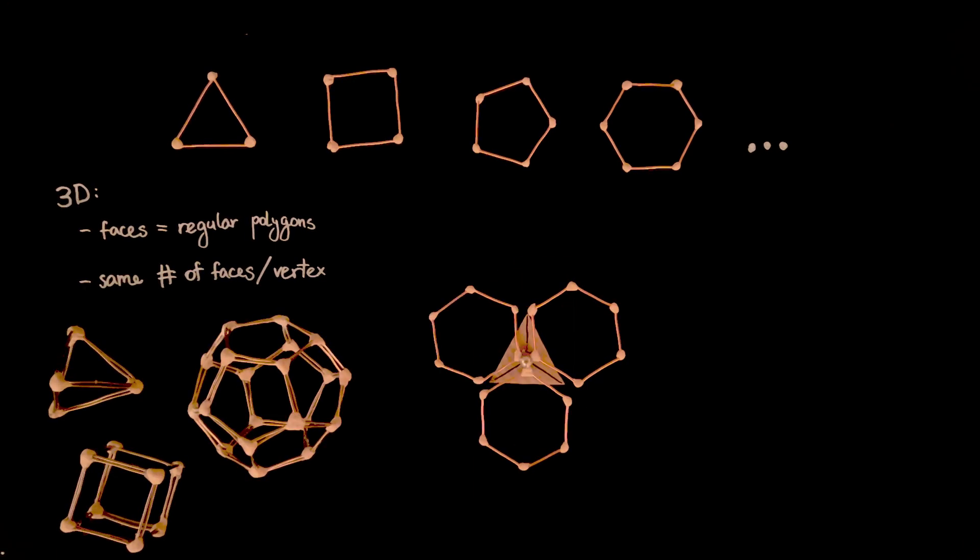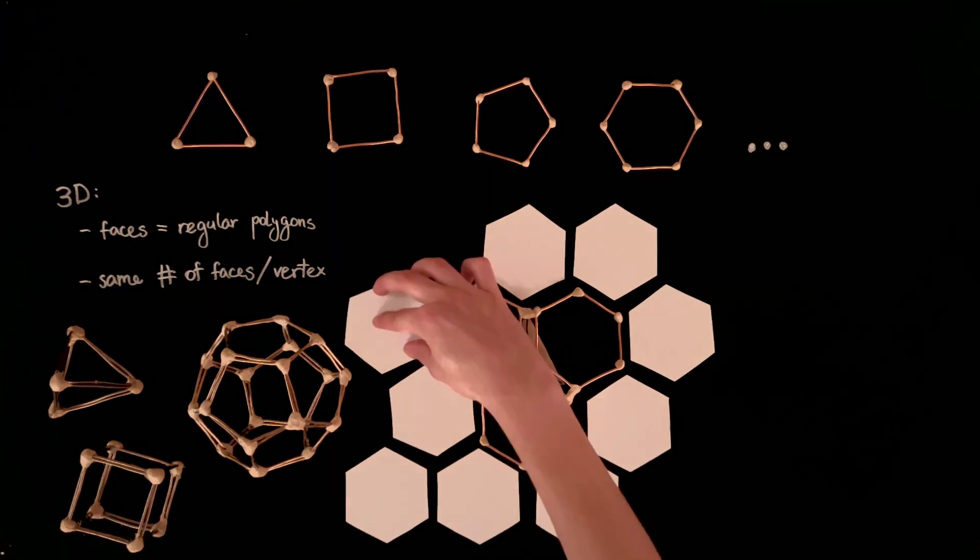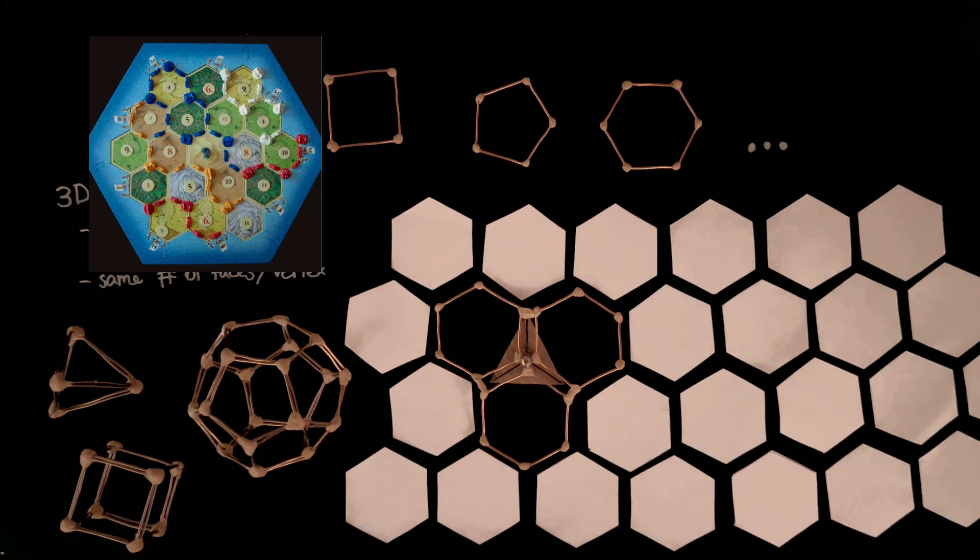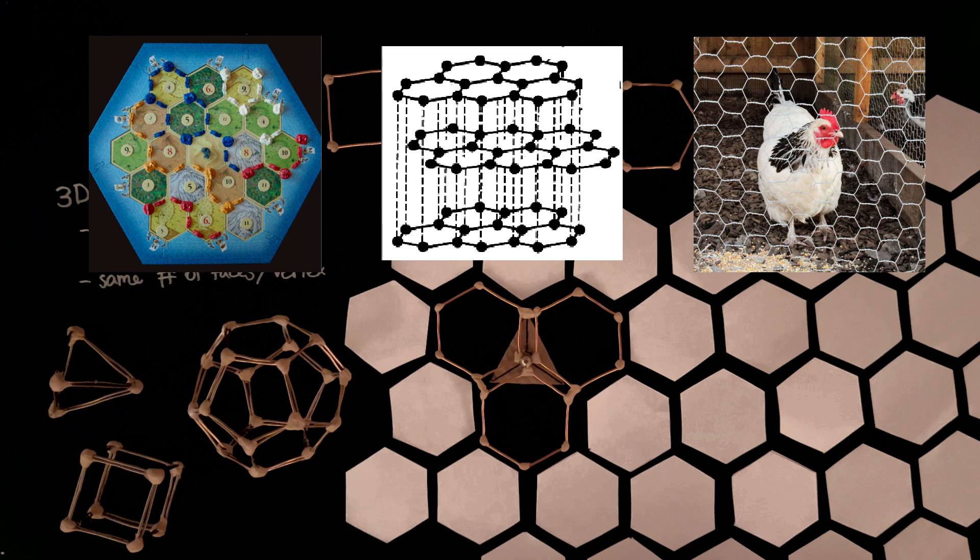What about hexagons? Alas, no wiggle room. But this perfect fit lets them tile the plane. Think catan, graphite, and chicken wire. The other polygons don't fit at all in Euclidean space, so it's time to change our foundation.